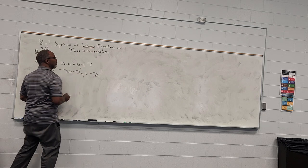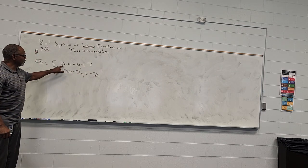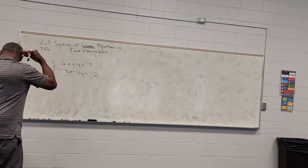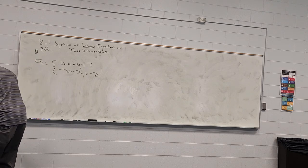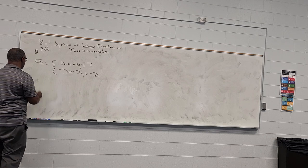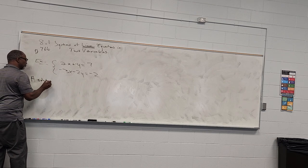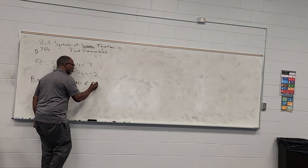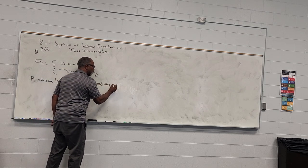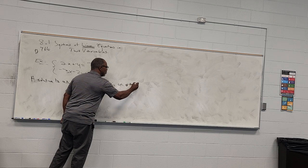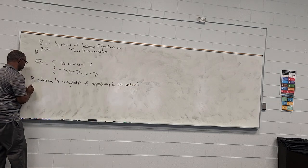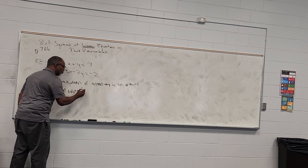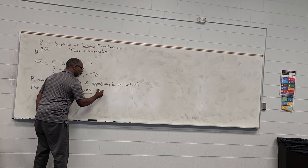Systems of linear equations — linear equations. In actuality, each equation is a line, so we're going to be dealing with two straight lines in the plane. A solution to a system, just like the one we have here, is an ordered pair x comma y that solves both — and that's the key word — both equations.